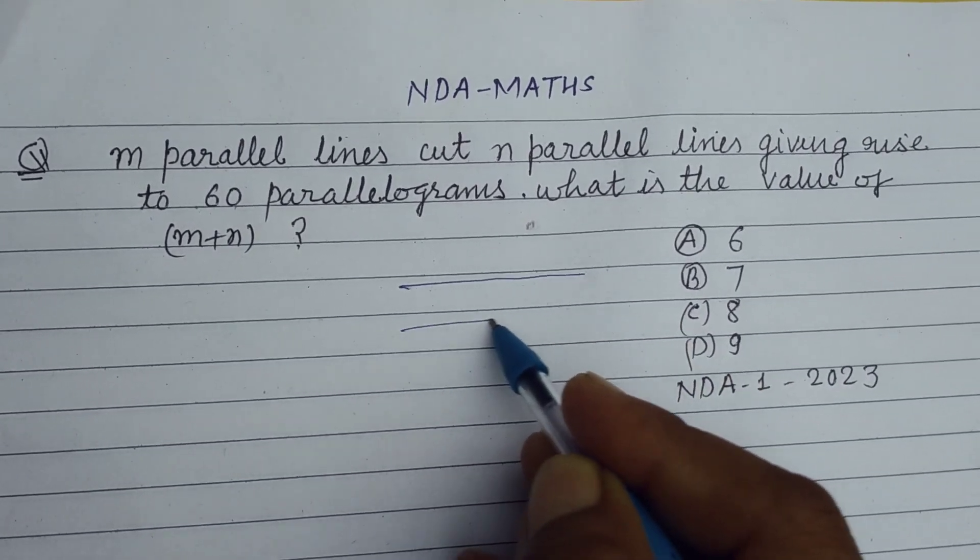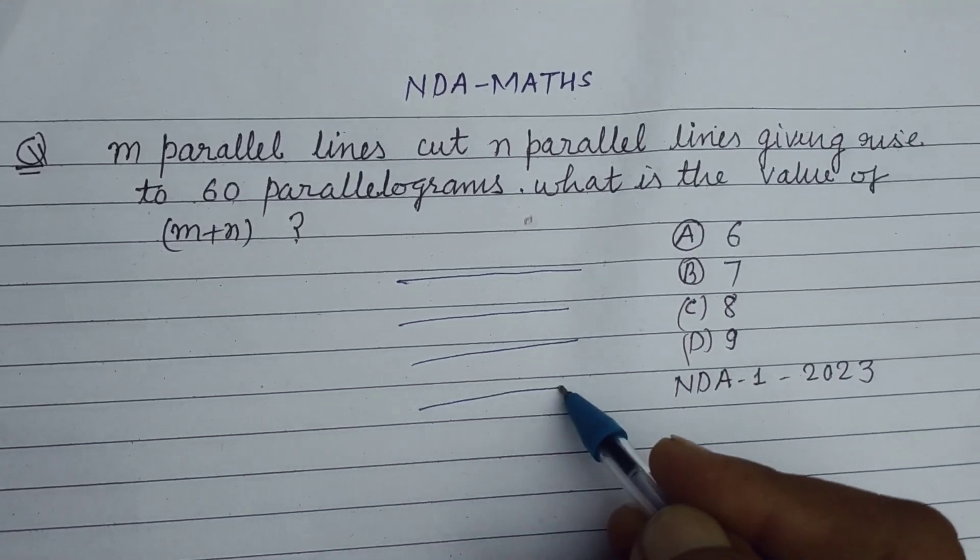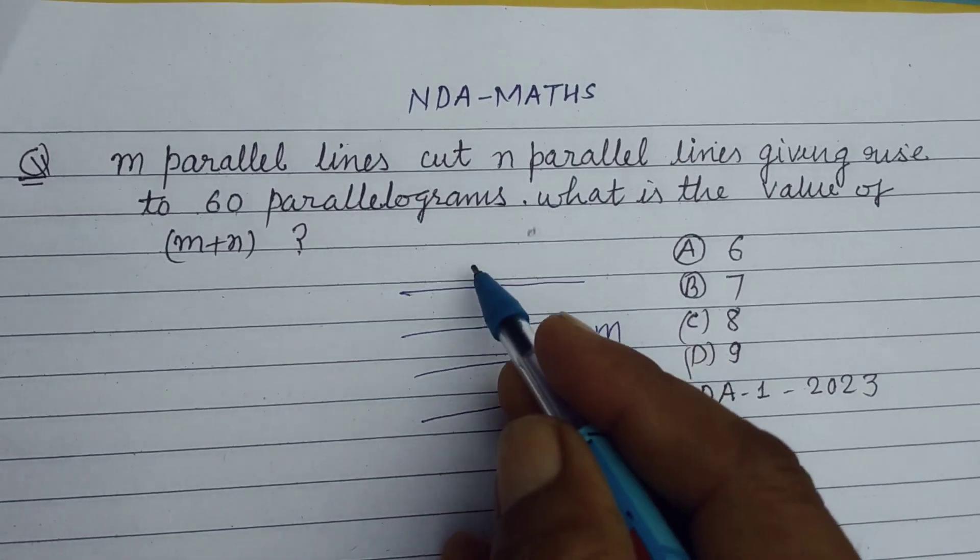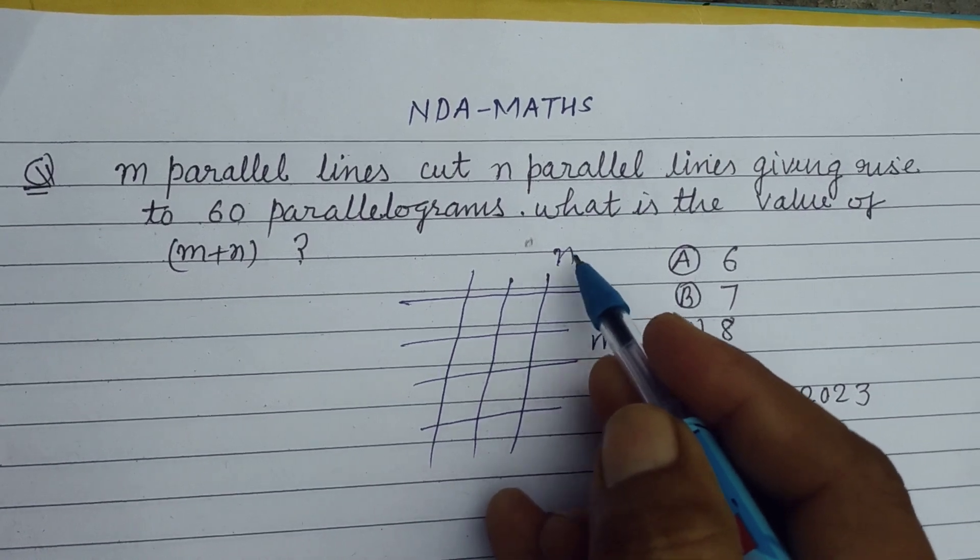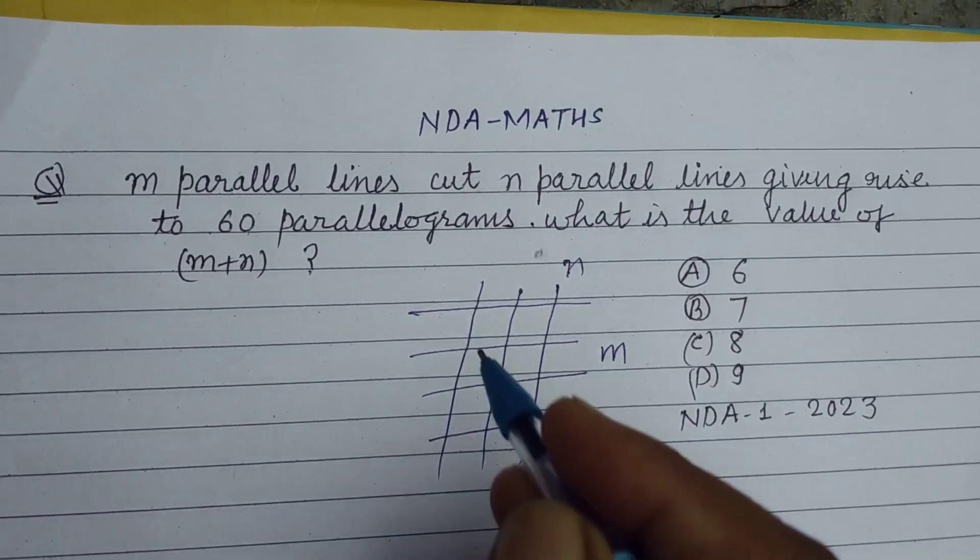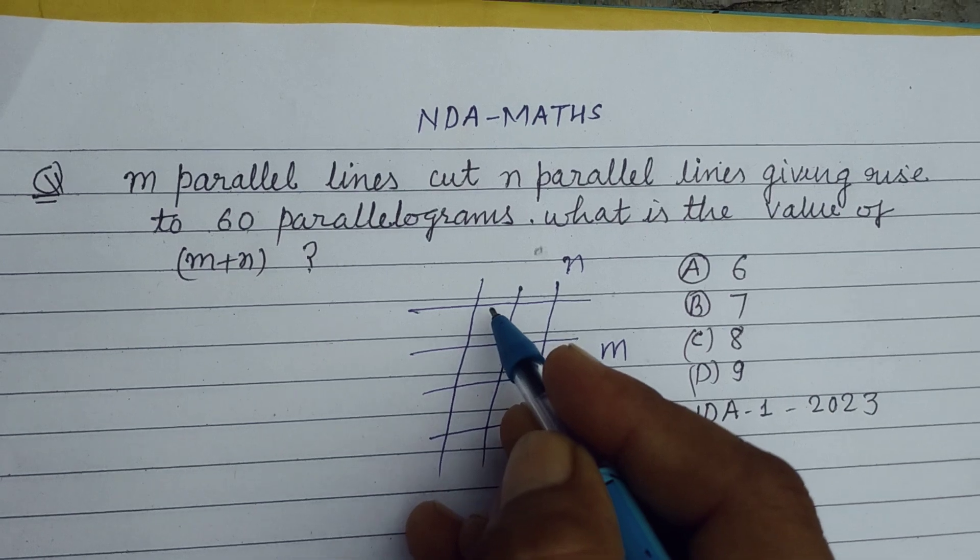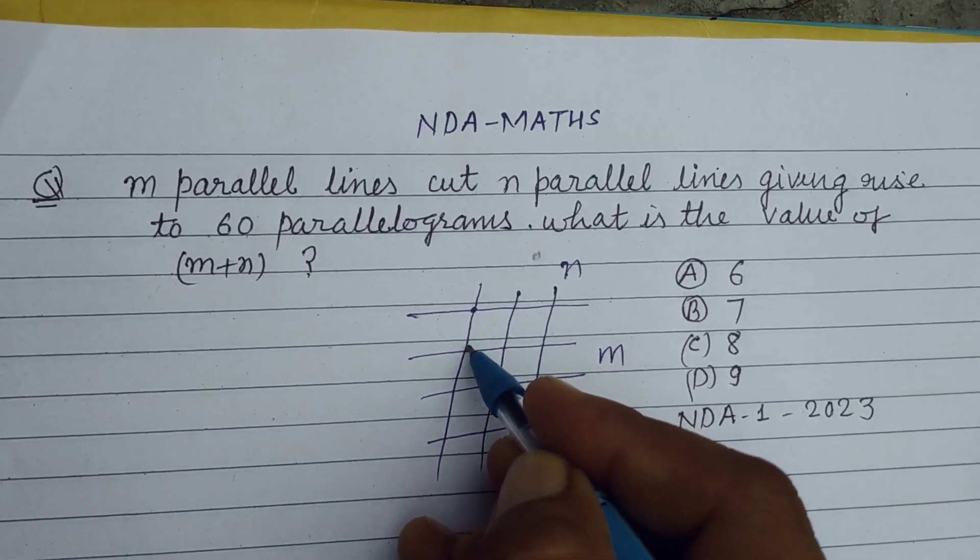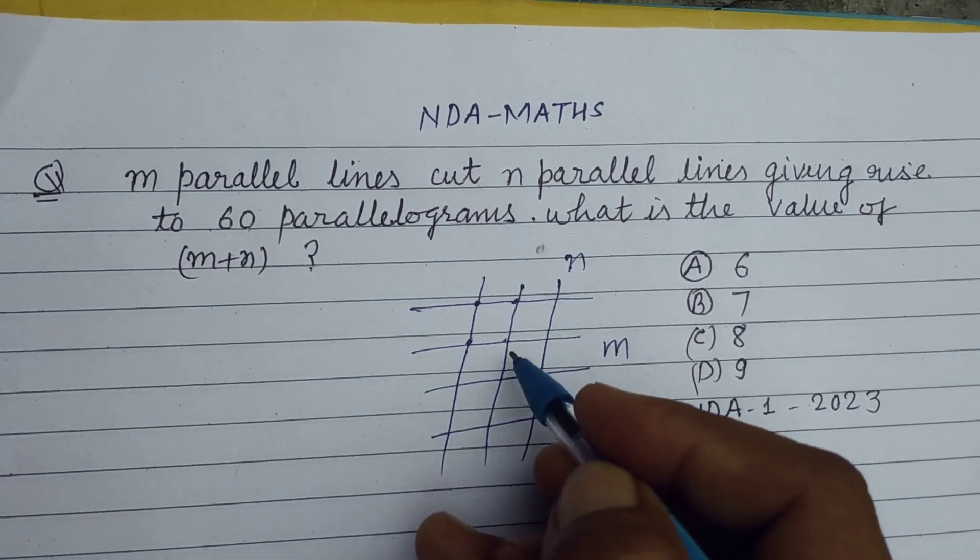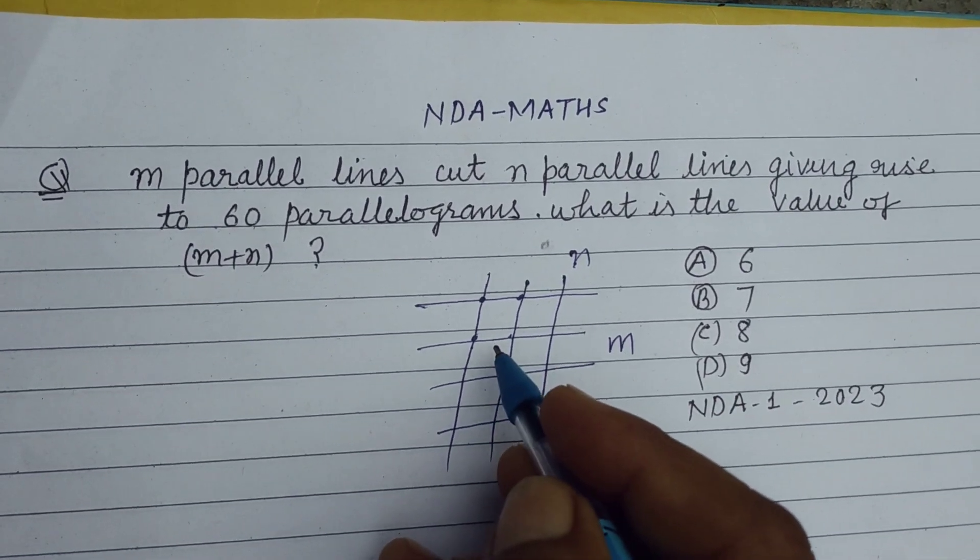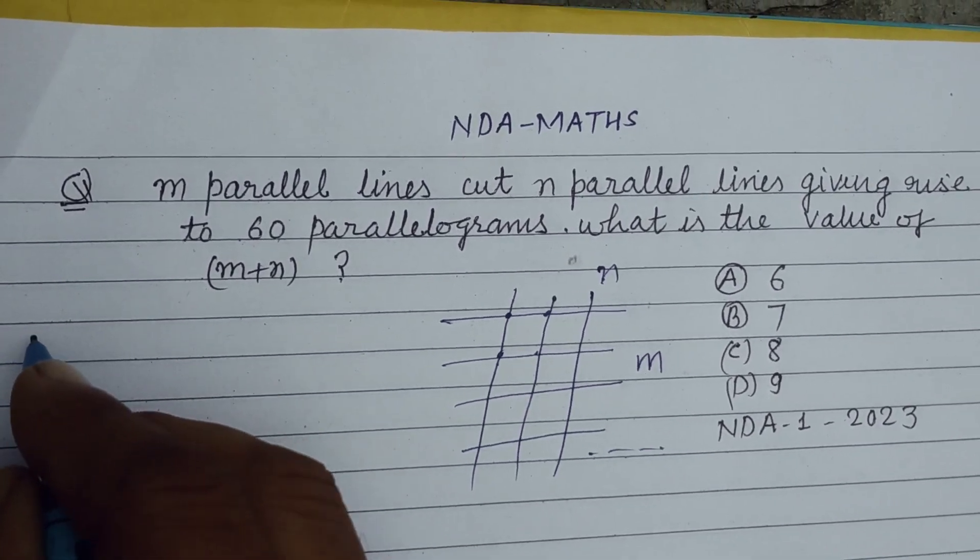So student, here are m parallel lines and there are also n parallel lines. When two parallel lines cut at two points, one is cutting at two points, another is cutting at two points, giving rise to parallelograms.